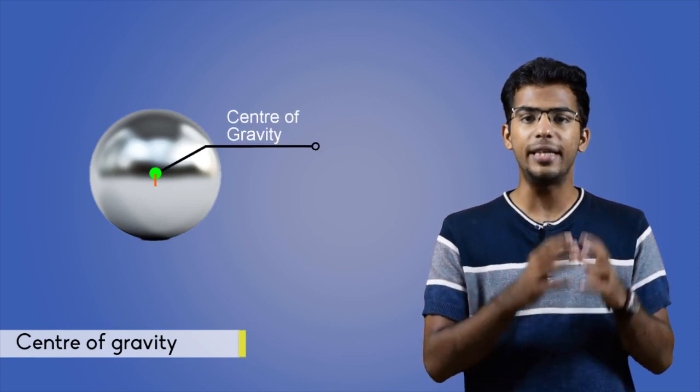All the bodies have a center of gravity and all the shapes have a centroid. Often these two terms are used interchangeably. Let's understand how they are different from each other. Center of gravity is the point where the entire weight of the body is assumed to be concentrated.